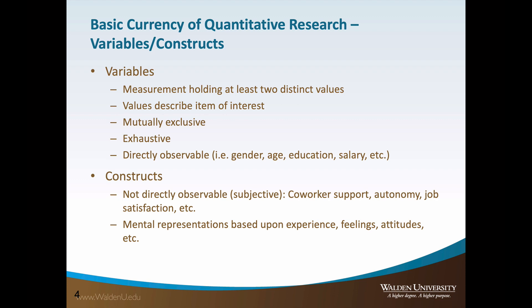Examples of variables include gender, age, education, and salary. On the other hand, constructs are not directly observable. They are subjectively derived as the study participants provide a mental representation based on factors such as experience, feelings, and attitudes.